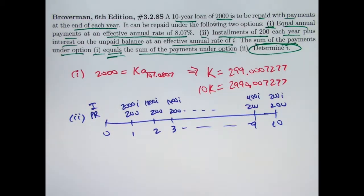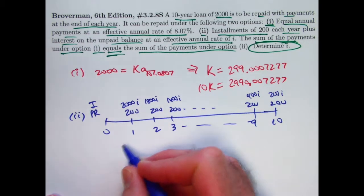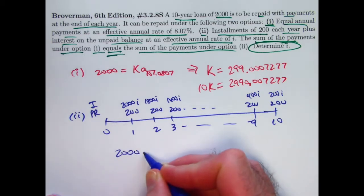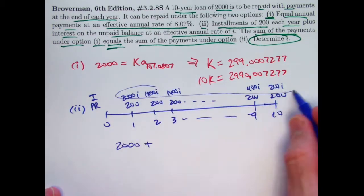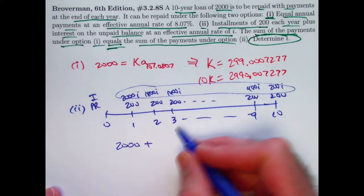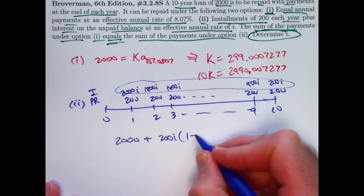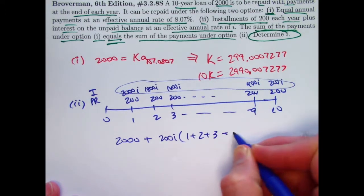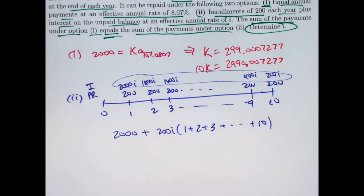Alright, so what is the total amount of payment that is going to happen here under option 2? Well, if you've got 200 times 10, you've got 2,000. That's the total principal. How much goes toward interest? It's the sum of these things. And those have a common factor of 200i. I can think of that as 200i times 1 plus 2 plus 3, etc. up to plus 10. No discounting going on here.